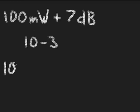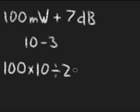So if I do the math, I would say 100, increase it by 10, which is to say I multiply by 10, and then I'm going to drop 3, which means I divide by 2 according to the rule of 10s and 3s, which will give me 1,000 divided by 2 equals 500 mW.